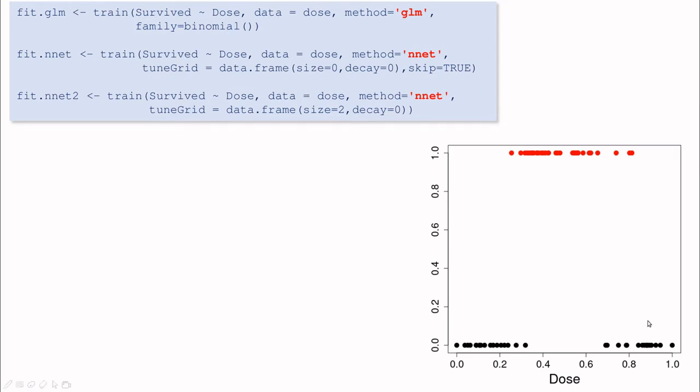So let me show you an example. Let's take this data set again. We have this low dose and high dose which are lethal, and then intermediate case which is the healthy one.